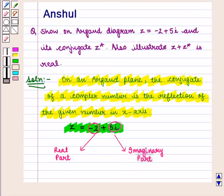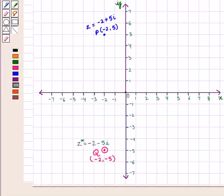Thus the conjugate of complex number z equal to minus 2 plus 5 iota is given by complex number z-star, which is equal to minus 2 minus 5 iota.